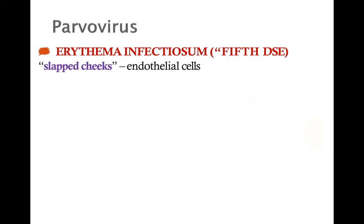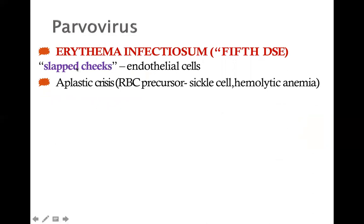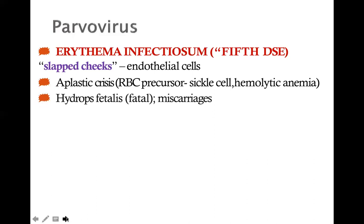The parvovirus is the causative agent of the fifth disease, or erythema infectiosum. The characteristic would be slapped cheeks, and the cells affected are the endothelial cells. In fifth disease, there are conditions such as aplastic crisis. The blood picture of aplastic crisis would still be normocytic normochromic. But the RBC precursor — before it becomes a mature red blood cell — in this disease it can develop as sickle cell anemia or hemolytic type of anemia, not reaching its 120-day maturation.